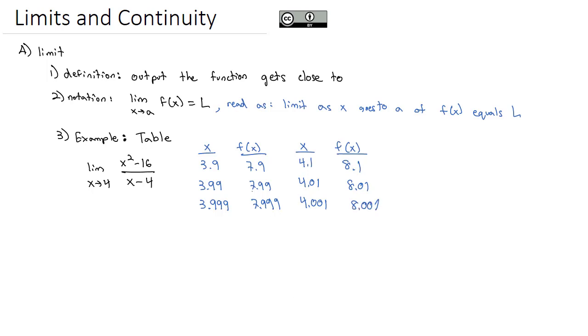I'll notice these values on the left side are getting closer and closer to 8, and on the right side are getting closer and closer to 8. That tells me that the limit as x goes to 4 of x squared minus 16 over x minus 4 is equal to that value of 8. Because x gets closer and closer to 4, the function is getting closer and closer to 8. That's our limit.